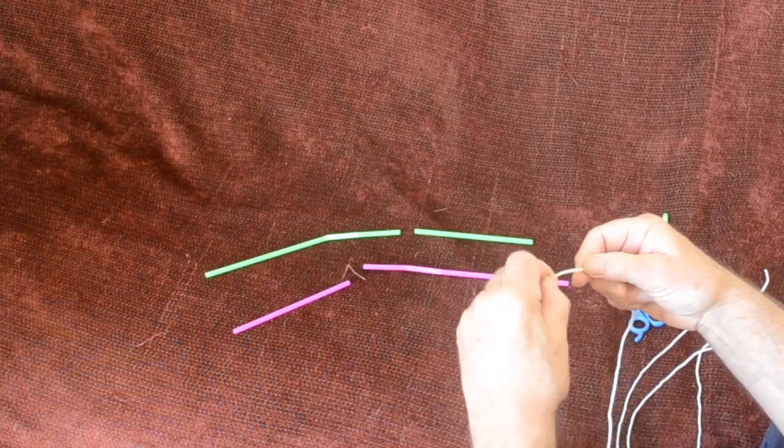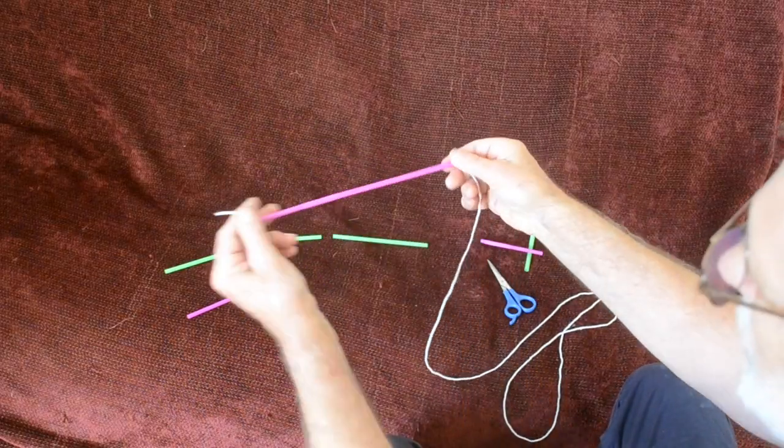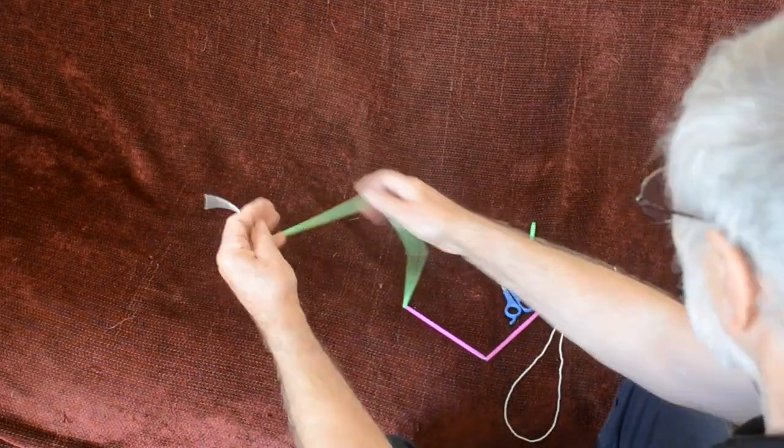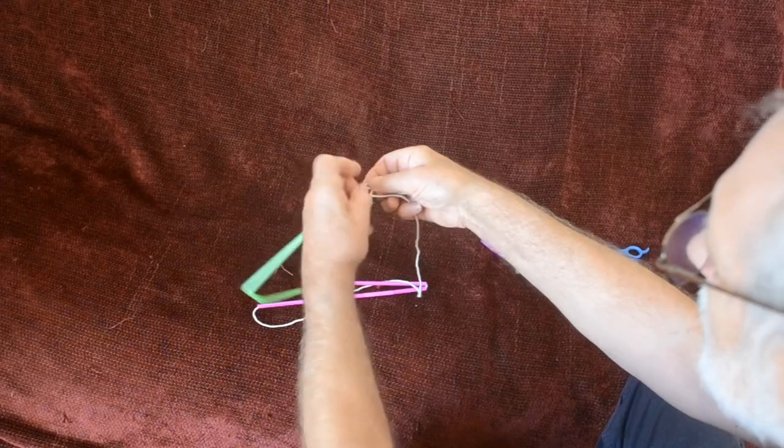Then thread the string through them, starting from one end, going through the bendy bits in the middle and the other bit, then the next bendy bits and the other bit. Then tie the ends together using a simple reef knot.